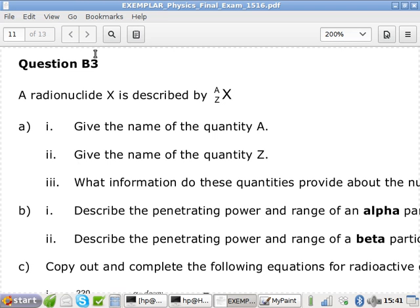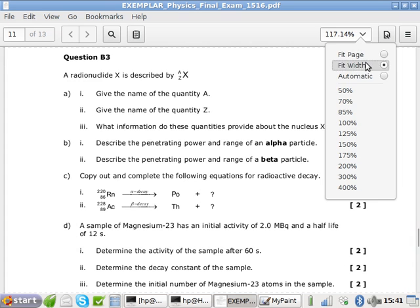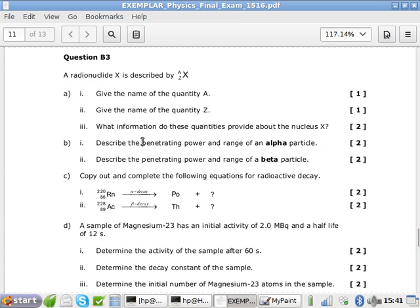Well, what does the A tell us? How many protons plus neutrons? Yes. What does the Z tell us? How many protons. How many protons. I mean, that's all very straightforward. I don't need to write this down even, do I?